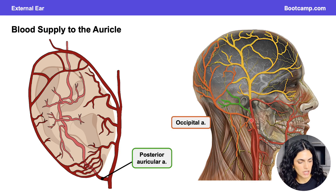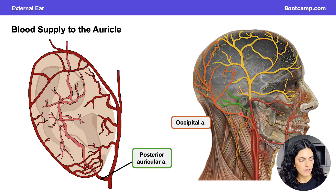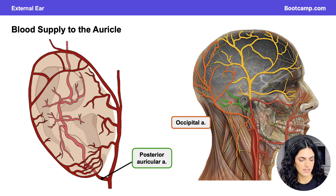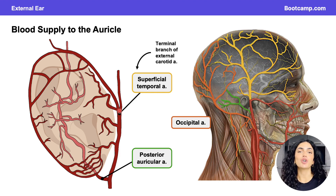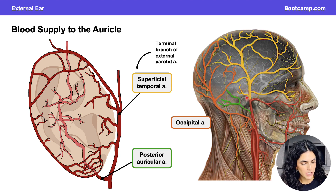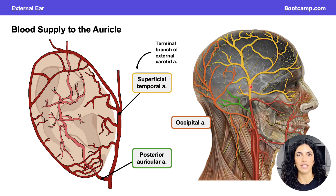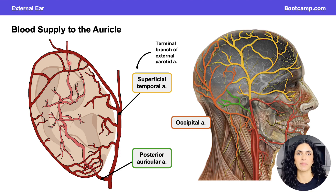The occipital artery, outlined in orange, doesn't supply as much as the posterior auricular, but there are a few small branches entering the occipital region that supply the posterior aspects of the ear and the mastoid process. Lastly, the superficial temporal artery — outlined in yellow — is a terminal branch of the external carotid. It gives off branches supplying the more anterior and superior aspects of the auricle.